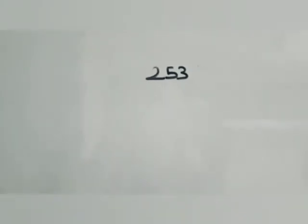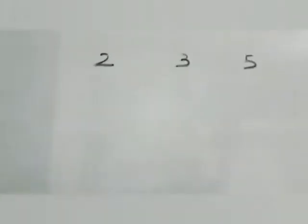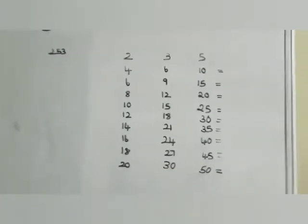The next step is to check how many digits we have in the number. We do have three digits. What are the digits? Two, three, and five. Now what we have to do is write the two-table, three-table, and five-table.